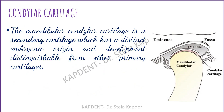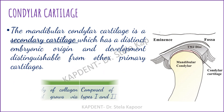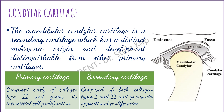Based on embryonic origin, cartilage can be primary or secondary. Primary cartilage is composed solely of type 2 collagen and grows via interstitial cell proliferation. Secondary cartilage is composed of both type 1 and type 2 collagen and grows via appositional proliferation. Ontogenically, the mandibular condylar cartilage is a secondary cartilage.